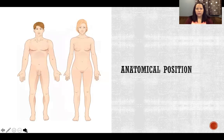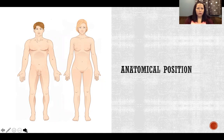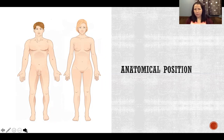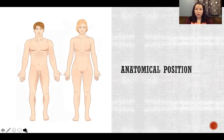Starting with anatomical position. Anatomical position is important because whenever we describe any kind of movement or location of structures in the body, it's always relative to anatomical position. The assumption is always relative to anatomical position unless you have reason to think otherwise. So unless I say that the shoulder was flexed or give you some reason to think the body was not in anatomical position, always assume that the body is in anatomical position.